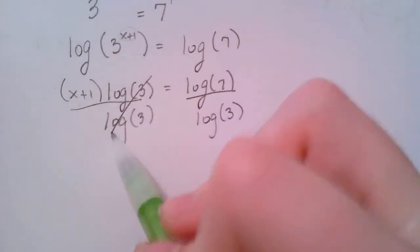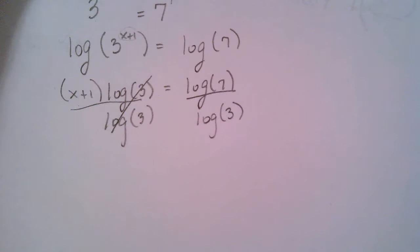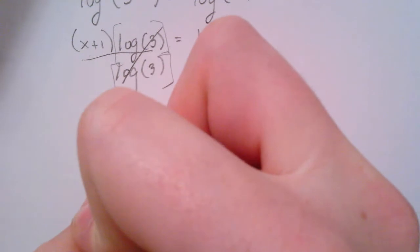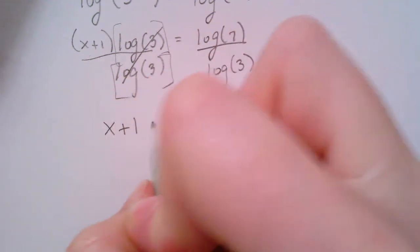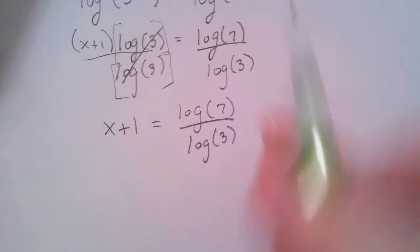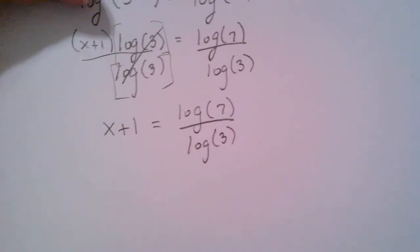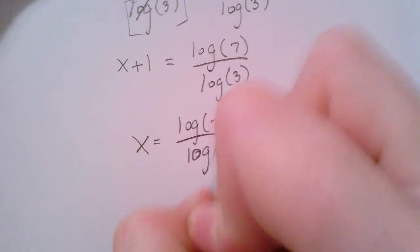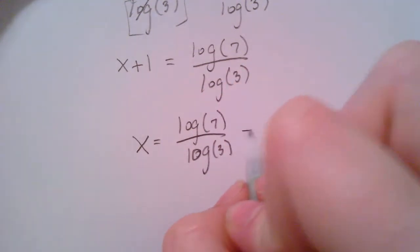Anytime you're multiplying by a number, you can get rid of it by dividing. Notice I'm dividing by the entire number log of 3. So that whole number, you can't just divide by three or just by log. It has to be that whole input and output thing. So what I'm left with on the left hand side is x+1. And over here, I'm going to have a very exact answer of log(7) over log(3). And to finish simplifying and solving for x, I would need to subtract one from both sides. So x is equal to log(7) over log(3) minus one.